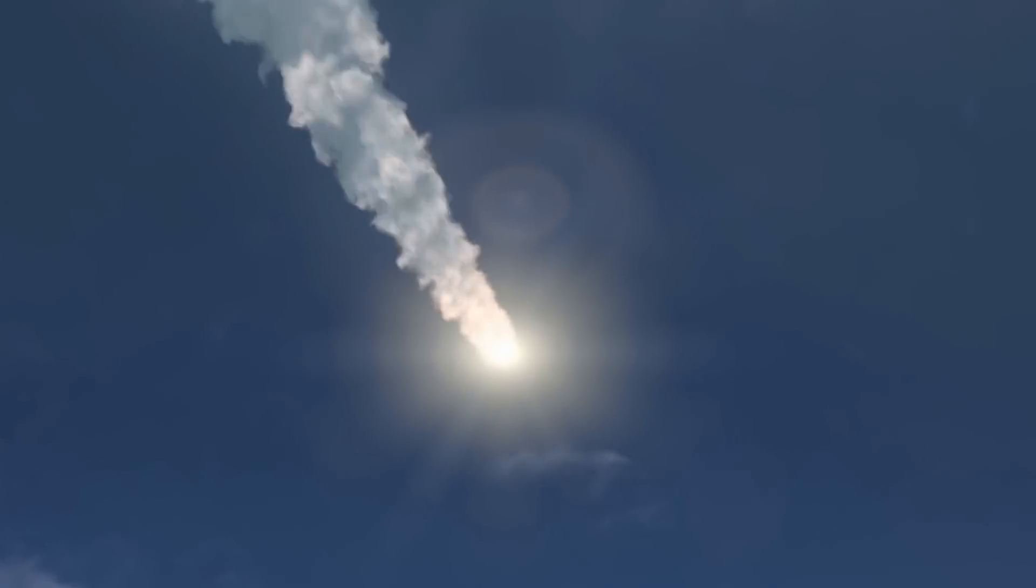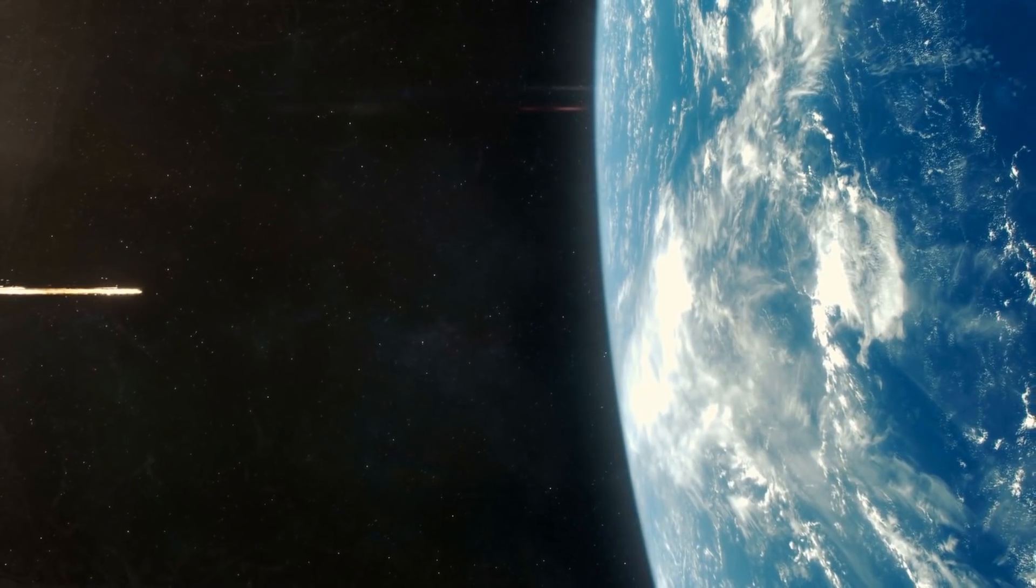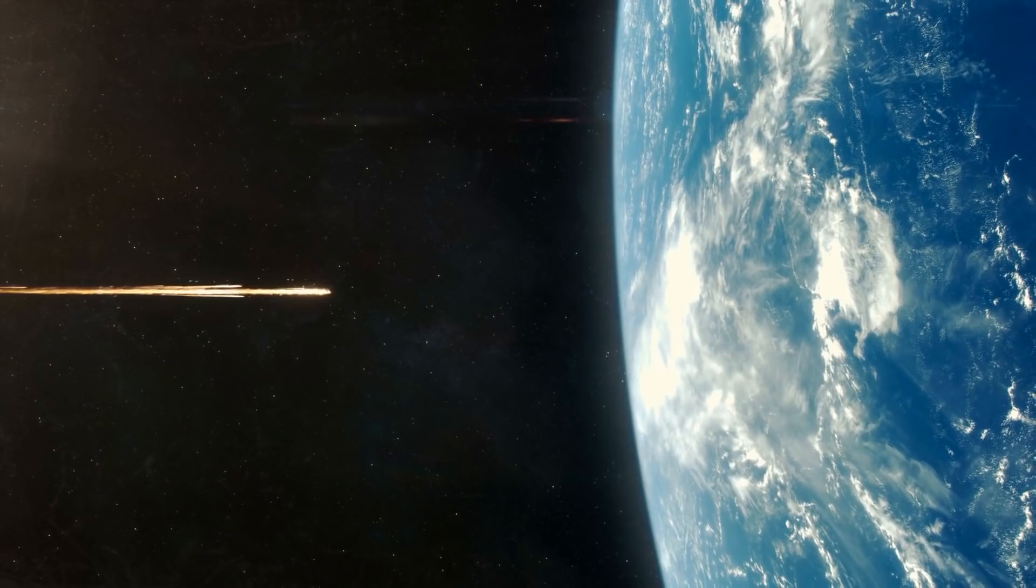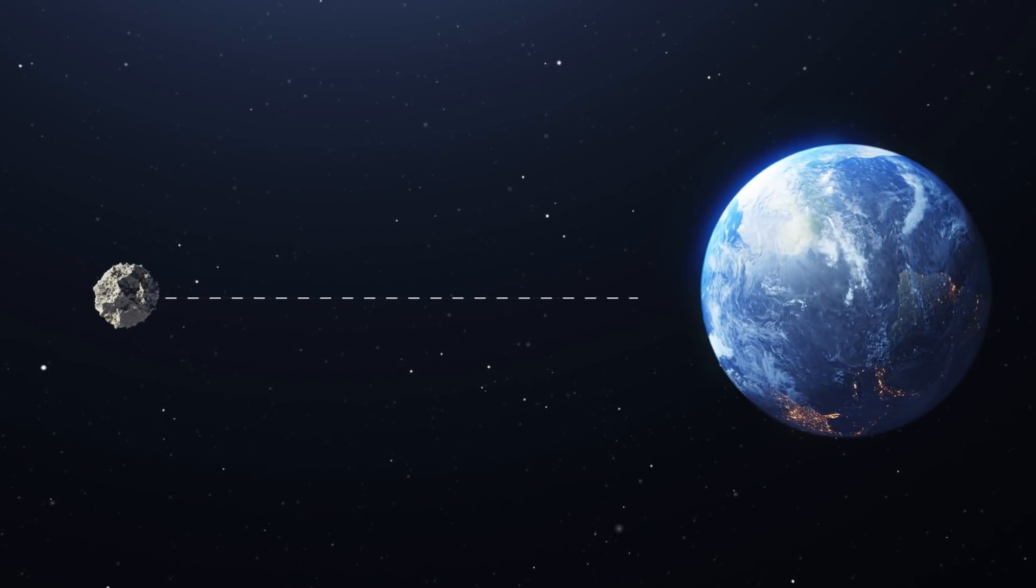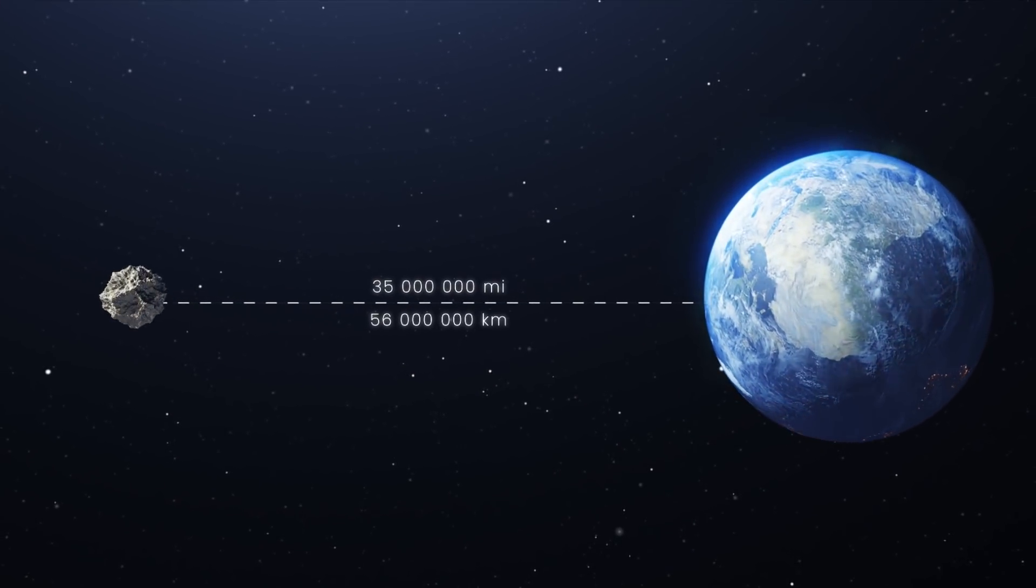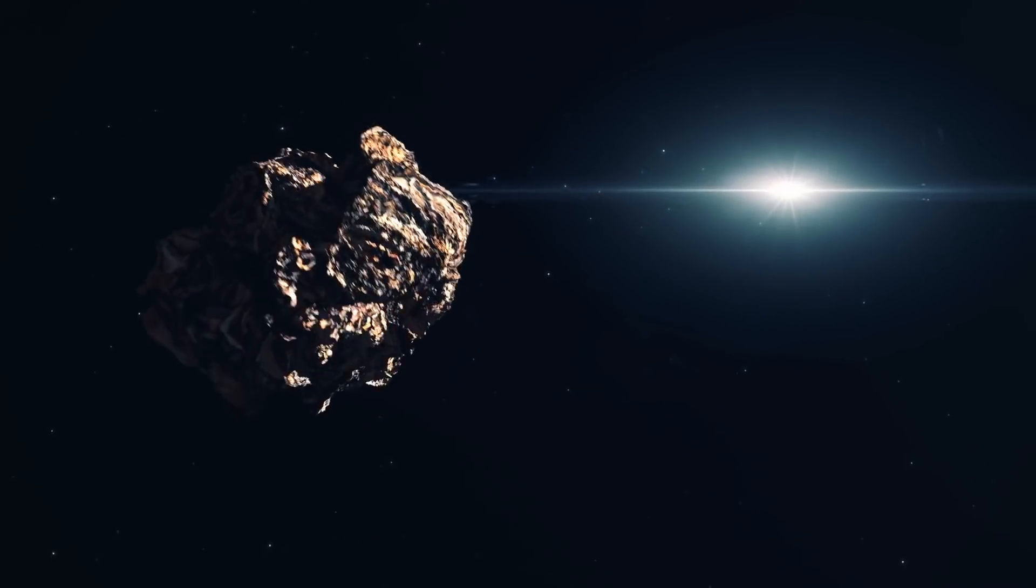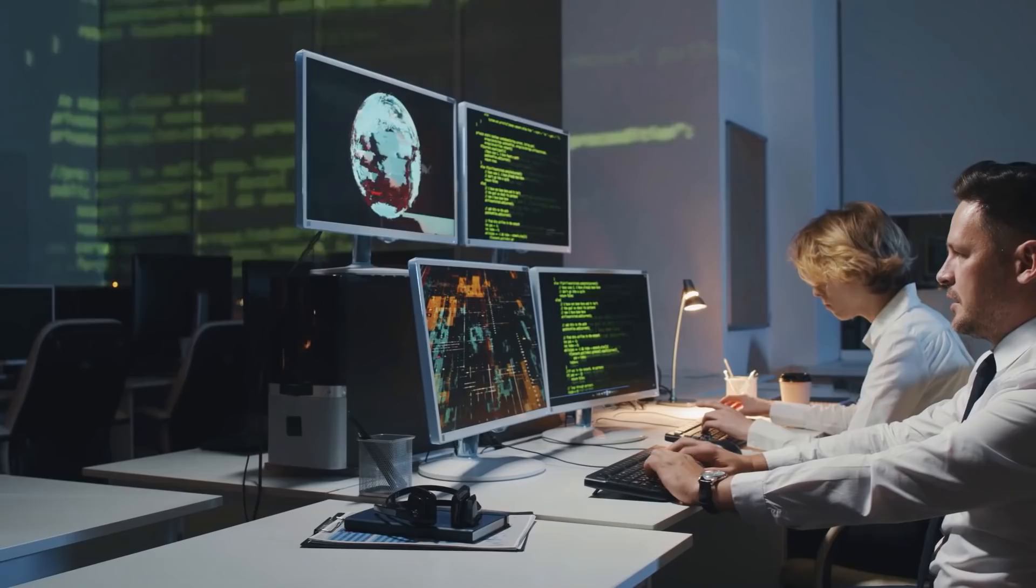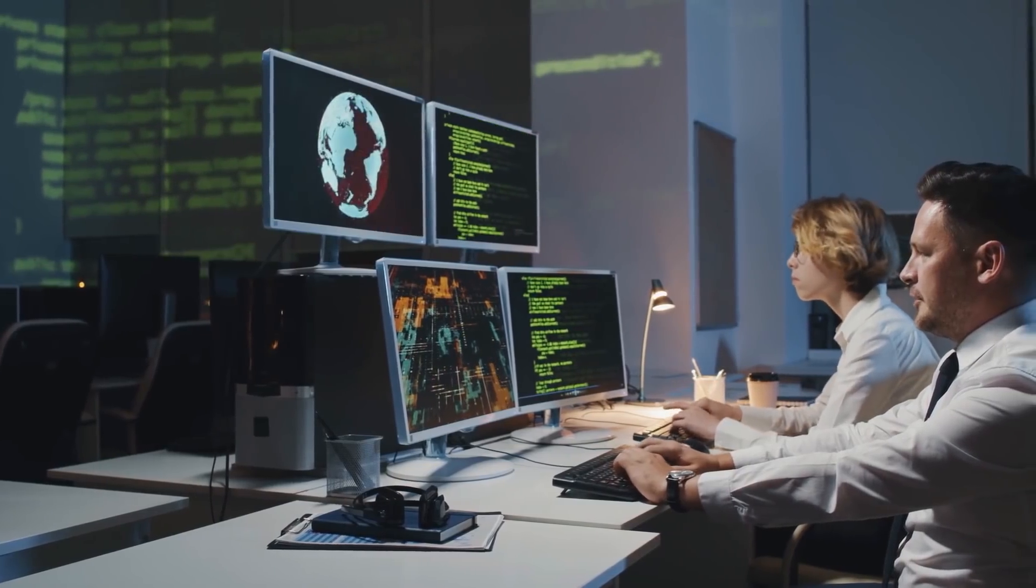NASA has recently conducted an experiment that proved we wouldn't be able to do anything about an asteroid heading straight towards us, even if we had six months' warning. The simulation of the hypothetical scenario involved an asteroid at a distance of 35 million miles. Throughout each phase of the exercise that lasted a week, scientists received more and more data about the asteroid.